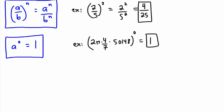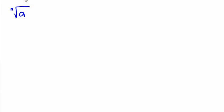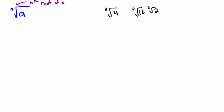Now we have another rule that's really important: the nth root of a. This is what we call the nth root of a. You're used to seeing square roots like the square root of 4 or 16, but there's actually a stealth 2 there — it comes up so often that people stopped writing it. We can have lots of different roots, and the nth root of a is the same thing as a to the power of 1 over n.